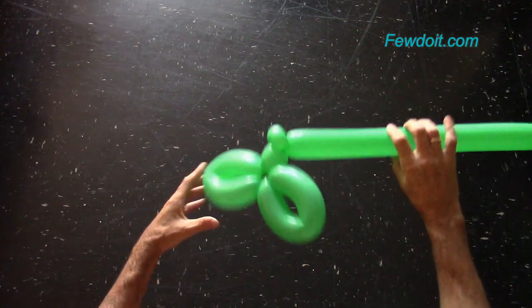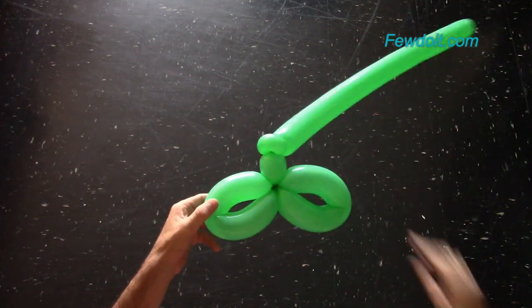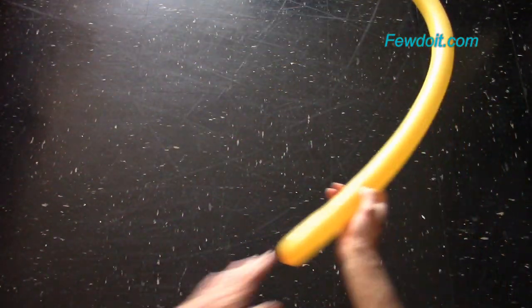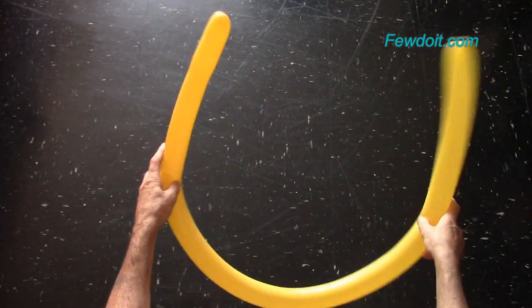The fourth bubble is an additional bubble. It will help us to shape the top of the head. Later I will show you how the sculpture will look without the additional bubble.